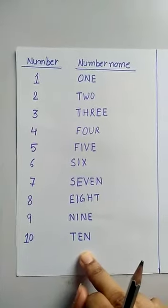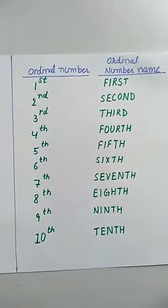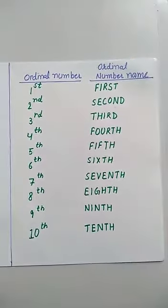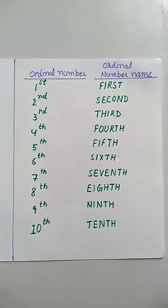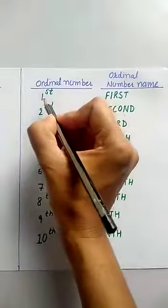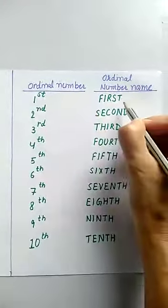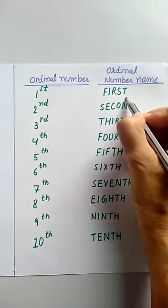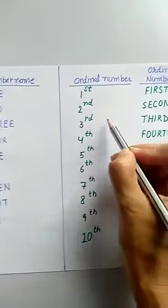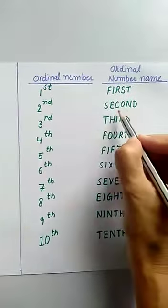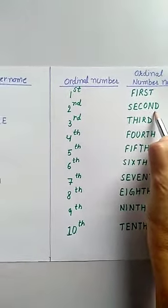Now we will learn about ordinal numbers. In ordinal numbers, number 1 will be written as first and the spelling will be F-I-R-S-T, first. Number 2 will be written as second and the spelling S-E-C-O-N-D, second.